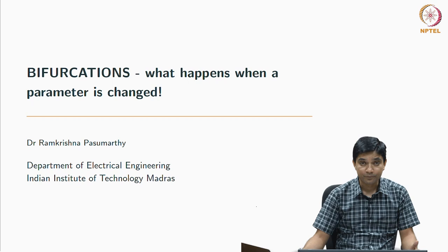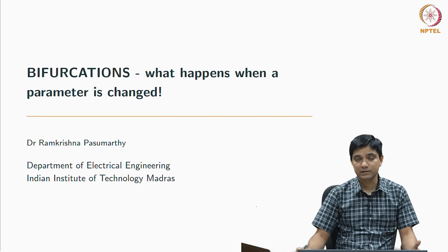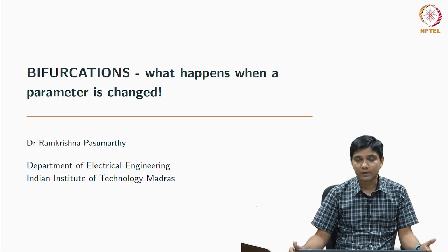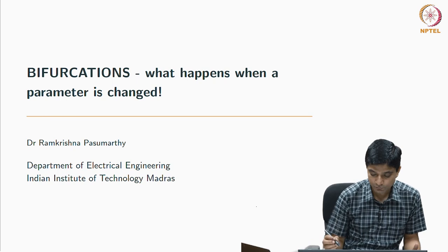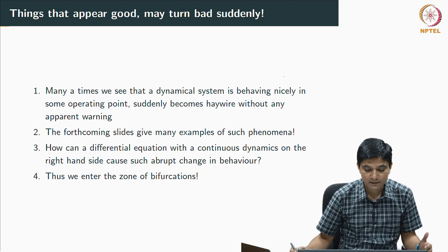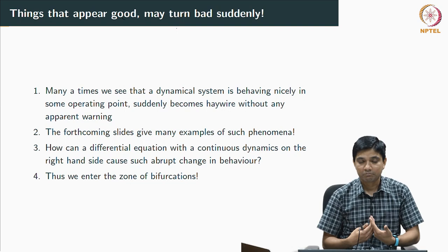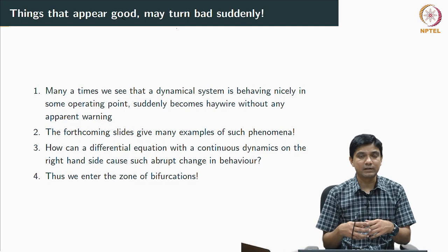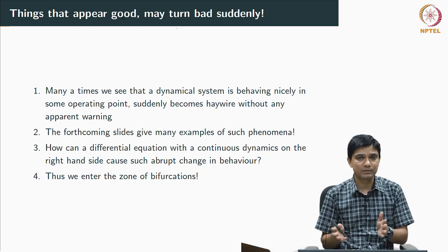What we will learn today is a very useful aspect of non-linear systems which is not very common in linear systems. I will start by motivating with linear systems, but we know why we can avoid that kind of phenomena. This is called the theory of bifurcations — we will typically look at what happens when a system parameter is changed. Things that appear good may turn bad suddenly, and vice versa.